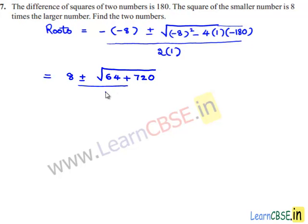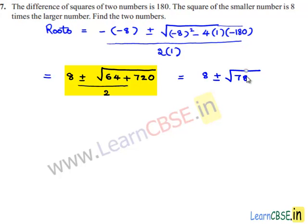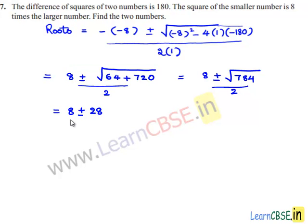So this is equal to 8 plus or minus the square root of 784, divided by 2. So this is equal to 8 plus or minus 28, divided by 2.